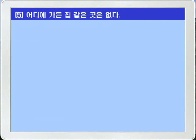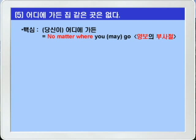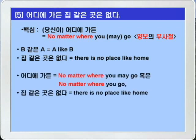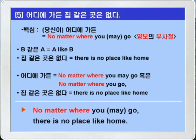5번. 어디에 가든 집 같은 곳은 없다. 이 영작의 핵심은 4번과 마찬가지로 wherever를 이용해서 'wherever you may go' 혹은 'wherever you go'로 쓰면 되는데, wherever가 no matter where의 뜻이니까 'no matter where you may go' 혹은 'no matter where you go'로 쓰는 것이 핵심입니다. '집 같은 곳은 없다' — a like b 이런 형식을 쓰면 되니까 — there is no place like home. 'No matter where you go, there is no place like home.'